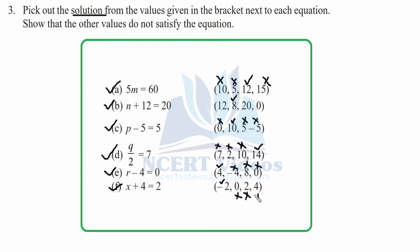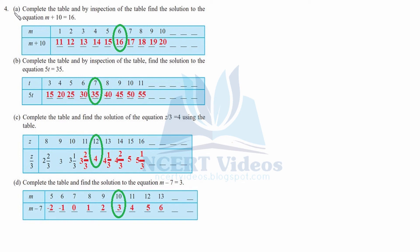Question four, part a: complete the table and by inspection find the solution to the equation m plus 10 equal to 16. We place the value of the variable in the equation. Placing m equal to 1: 1 plus 10 is 11, not equal to 16. Placing 2: 12, not equal to 16. Placing 3: 13. Placing 4: 14. Placing 5: 15. Placing 6: 10 plus 6 is 16 — so 6 is the solution.